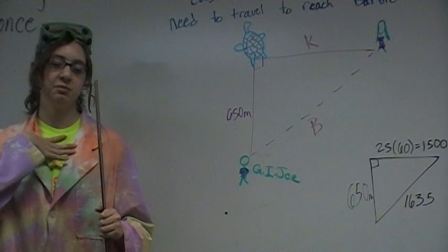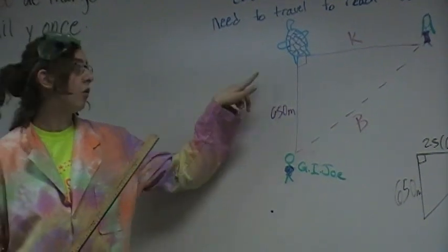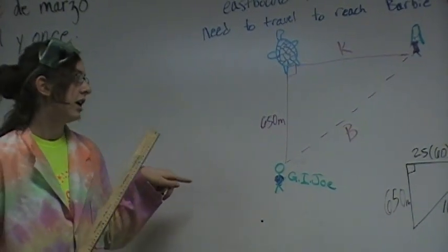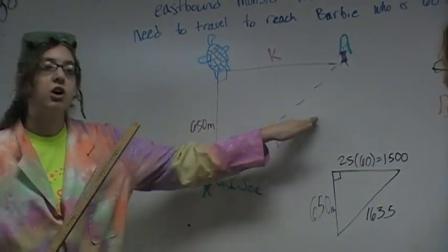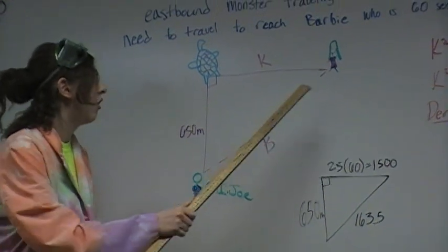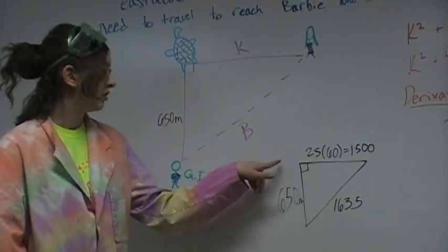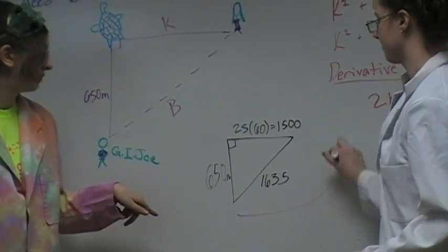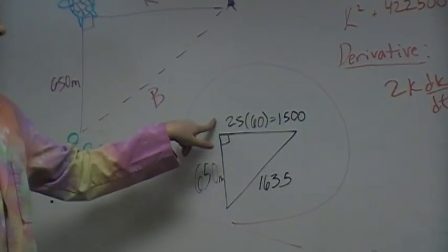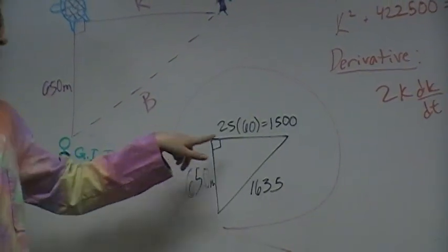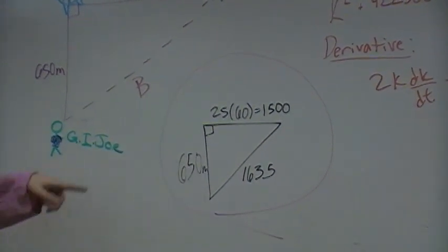Continuing on. So we know that G.I. Joe is 650 meters away from the monster. We do not know the distance between the monster and Barbie or the hypotenuse, the distance between G.I. Joe and Barbie. So in order to help solve for those, we drew another little triangle. We knew the 650 already. And we know that the monster is traveling 25 meters per second and that Barbie is 60 seconds away. So we plugged in 60 and multiplied those two to get 1500, which is actually the equivalent of K.